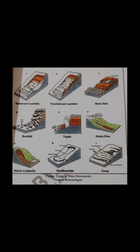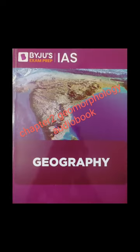The erosion and transportation of earth material is brought about by wind, running water, glaciers, waves, and groundwater. Of these, the first three agents are controlled by climatic conditions. The work of waves is determined by the location along the interface of lithosphere and hydrosphere (coastal region). The work of groundwater is determined more by the lithological character of the region. The karst topography develops in regions where rocks are permeable and soluble in water.